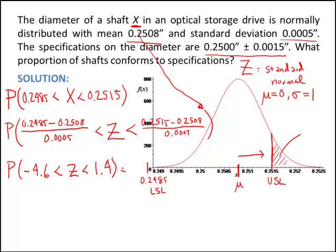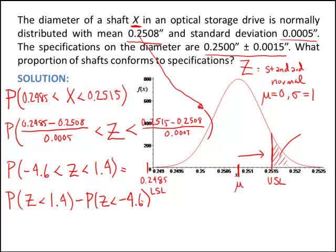Before we determine these, let's write this as one other statement. That's the probability that z is less than 1.4 — the area to the left of 1.4 — minus the area to the left of negative 4.6. To compute these values, I'm going to go to the cumulative standard normal table.